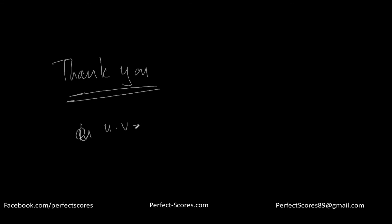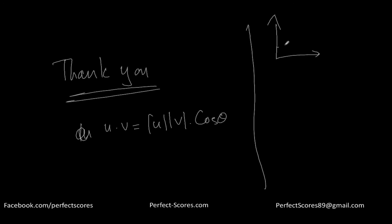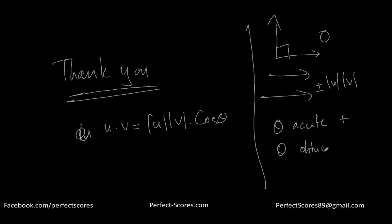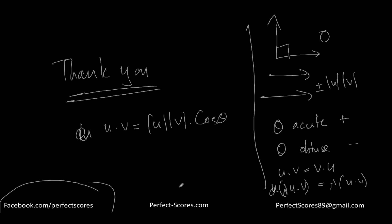So that wraps up this video. To summarize: the dot product u·v = |u|·|v|·cos(theta). Key properties: if the angle is 90 degrees, dot product is zero; if vectors are parallel, dot product is plus or minus the product of magnitudes; if the angle is acute, dot product is positive; if obtuse, it's negative. Also, u·v = v·u, and lambda·u·v = lambda·(u·v). Thank you for watching and I'll see you in the next one.